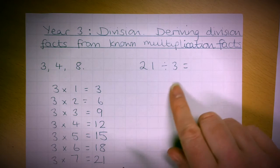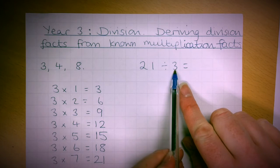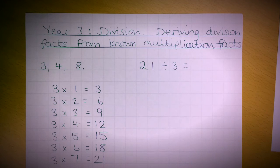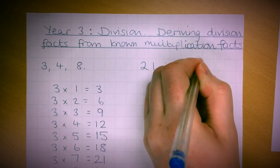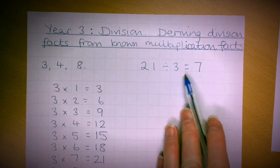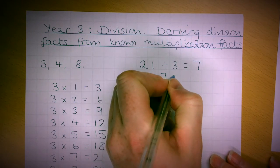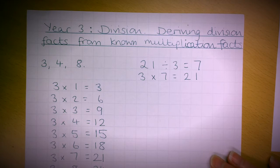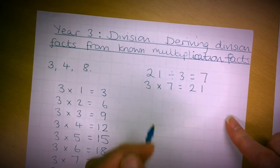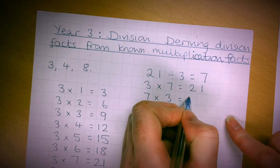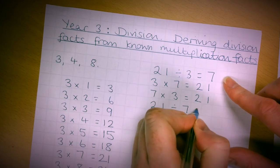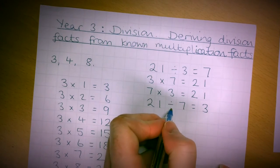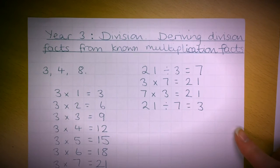I need to find: 3 times something equals 21. I look down my 3 times table until I find 21, and I can see that 3 × 7 = 21, so 21 ÷ 3 = 7. All we've done is reorder that calculation. This can also be written as 7 × 3 = 21, and 21 ÷ 7 = 3 — that's four number sentences generated from the same fact.